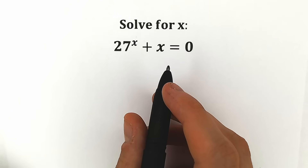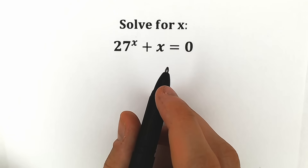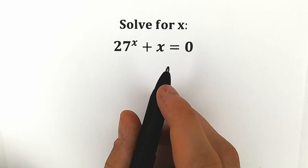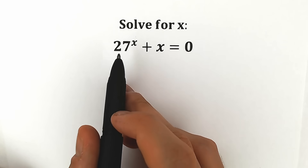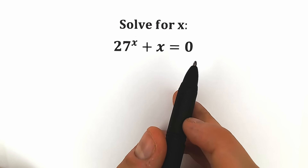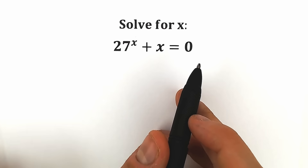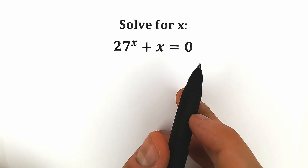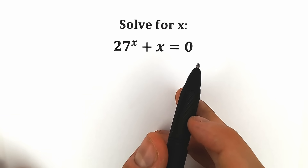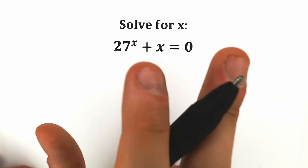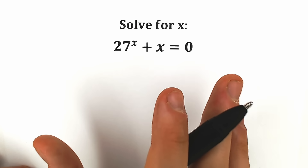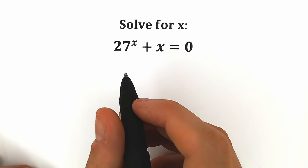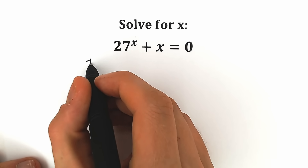Hello everyone! Welcome back to my channel. Today we have a really interesting exponential equation from a math exam: 27 to the power x plus x equals 0. If you have your solution, you can write it down in the comment section. Right now I'm going to solve this question and show you two really great methods. Let's start with the first method.